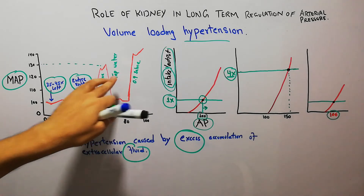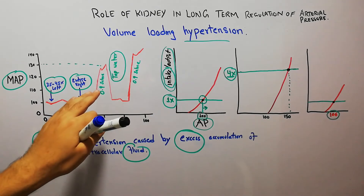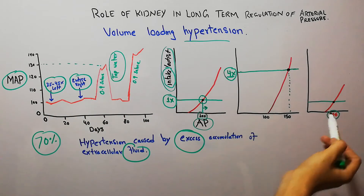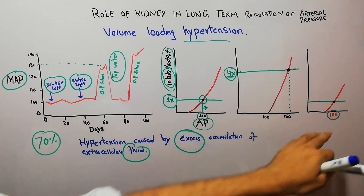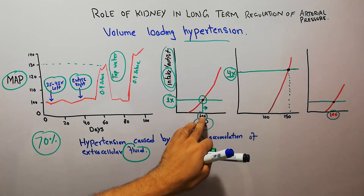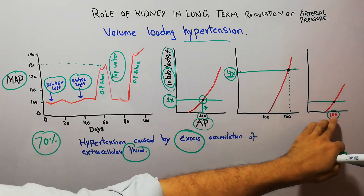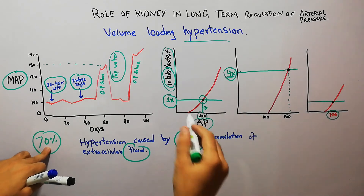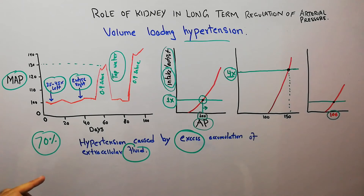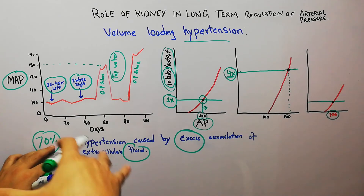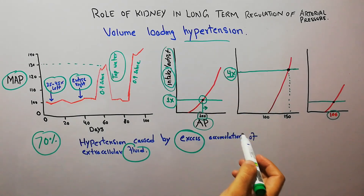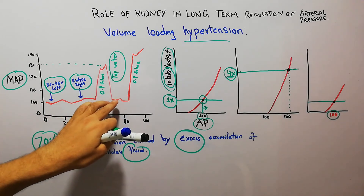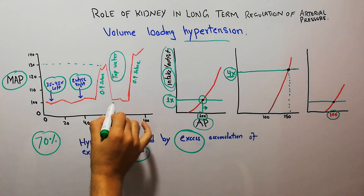The dogs are now given tap water instead of saline water. In a matter of few days, the arterial pressure falls back to around 106 mmHg — slightly above the normal 100 mmHg — because the kidneys have still been removed. We have two important determinants: renal functions and intake of salt and water. Initially only the renal functions were manipulated; then the dogs were loaded with salt water; now giving normal tap water decreases the arterial pressure.